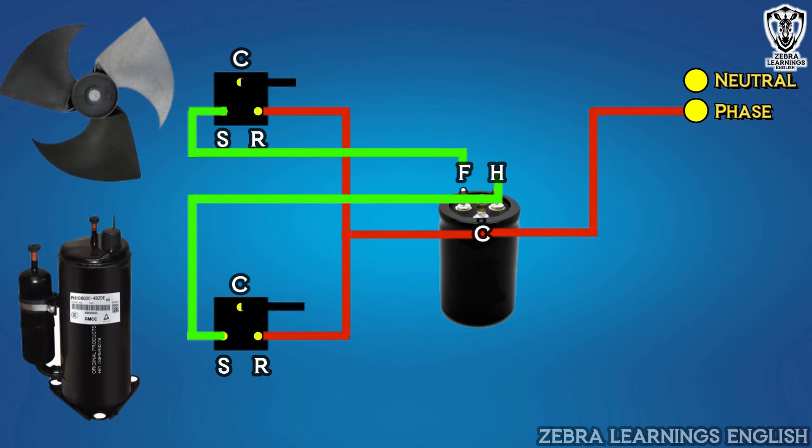Then, the common terminal of the compressor and fan motor should be connected to neutral. That's the dual capacitor wiring diagram of an AC unit.